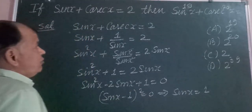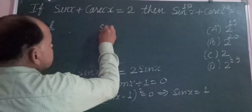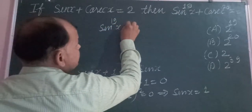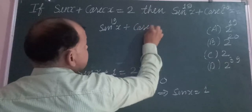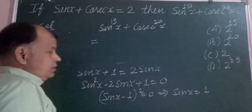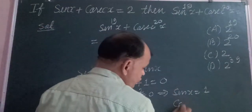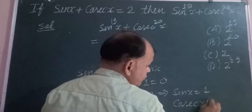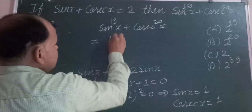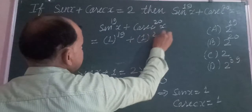Now we want to find the value of the given expression. We have sin x to the power 19 plus cos x to the power 20 equal to 1. We also get cos x equal to 1, so this becomes 1 to the power 19 plus 1 to the power 20.